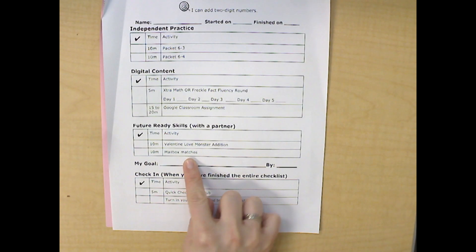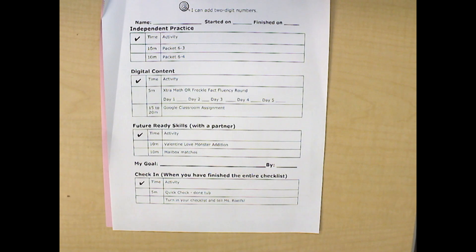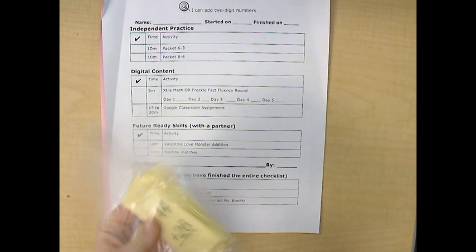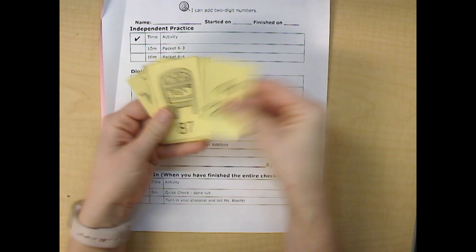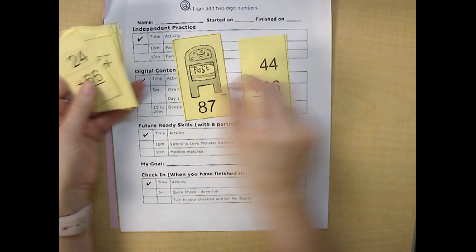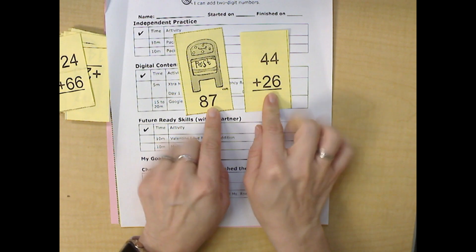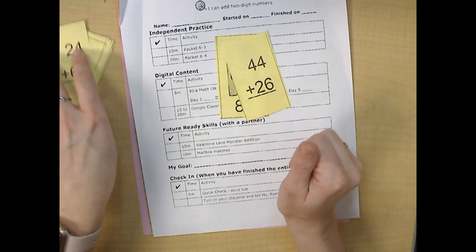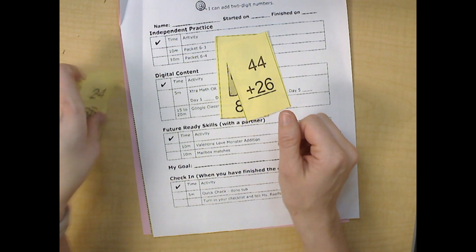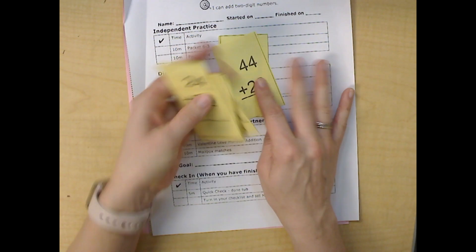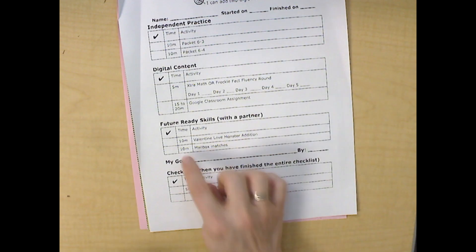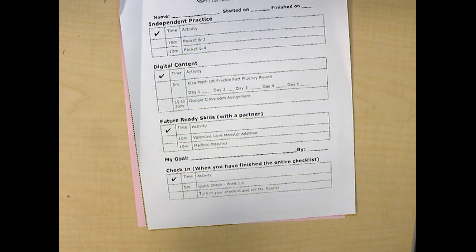The last game on here is mailbox matches. These are the yellow cards. Each card has a math problem or a mailbox. You have to find the answer to each mailbox and match them up. You and your partner are going to work to come up with all of the matches together. See how long it takes you. It shouldn't take you more than 10 minutes, but you'll have to work together because it can be tricky.